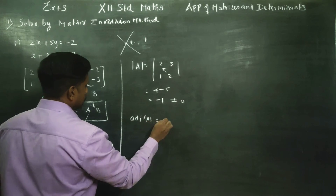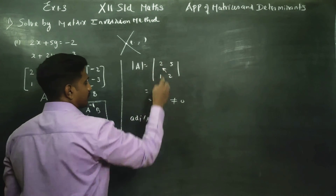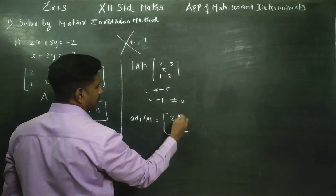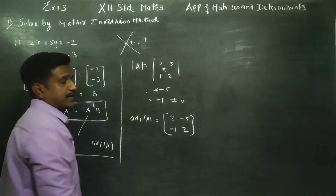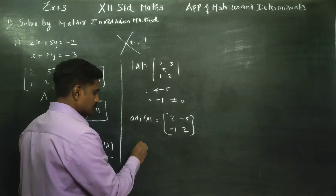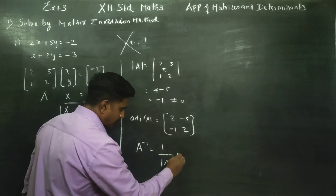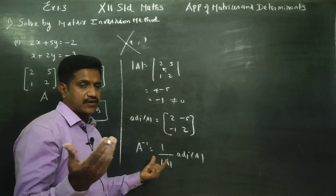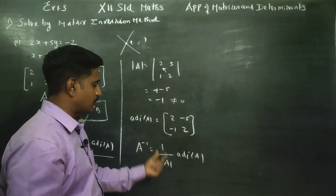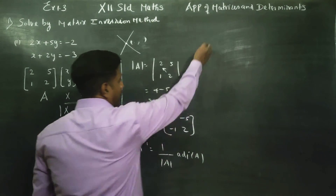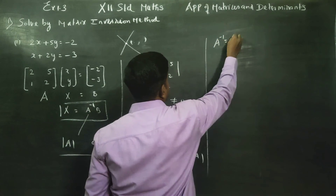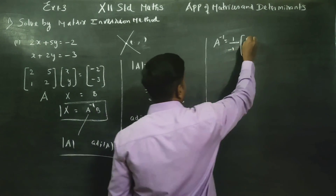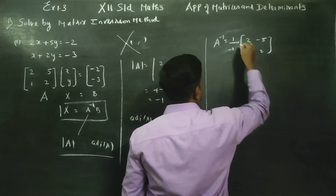Now, Adjoint A. For a 2×2 matrix, using the shortcut: interchange the diagonal elements (2 and 2 stay, swapped) and change the signs of off-diagonal elements, giving Adjoint A = [2, -5; -1, 2]. The A inverse formula is 1 by Determinant A times Adjoint A. So A inverse = (1 / -1) × [2, -5; -1, 2].